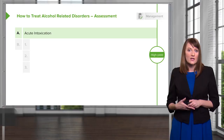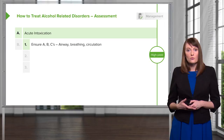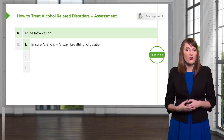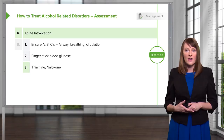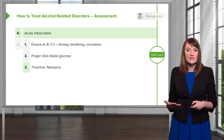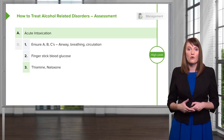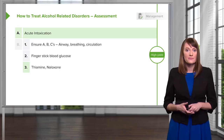To treat acute intoxication, probably encountered in the emergency room, you want to ensure the ABCs — airway, breathing, and circulation. Check their vital signs and blood glucose. You're going to quickly administer thiamine and also naloxone. Naloxone helps protect this patient in case they have a mixed drug-alcohol overdose, specifically protecting against any ingestion of opiates.